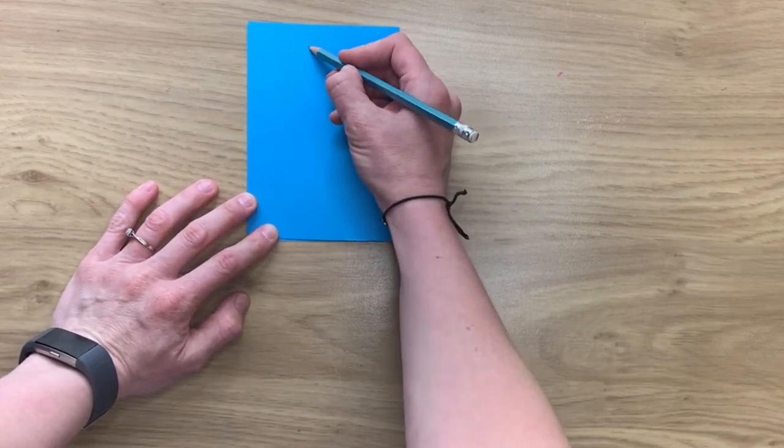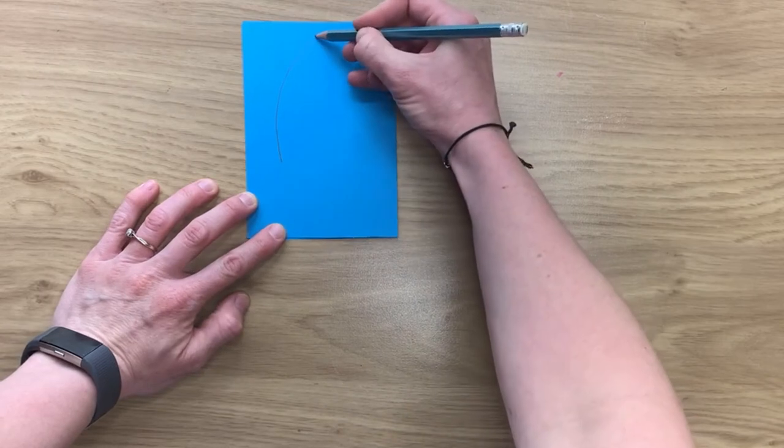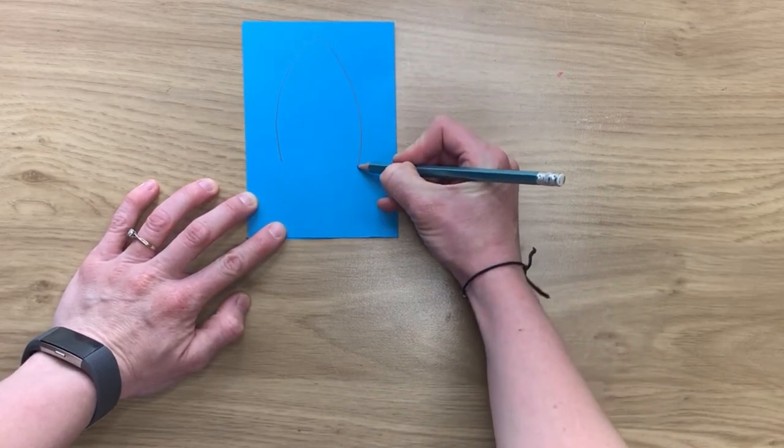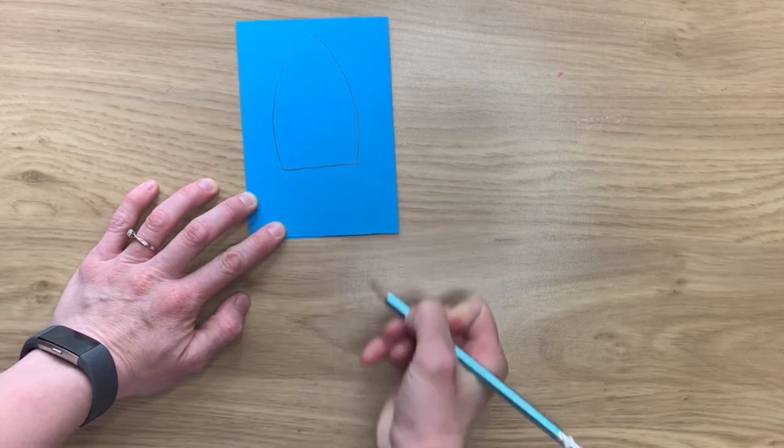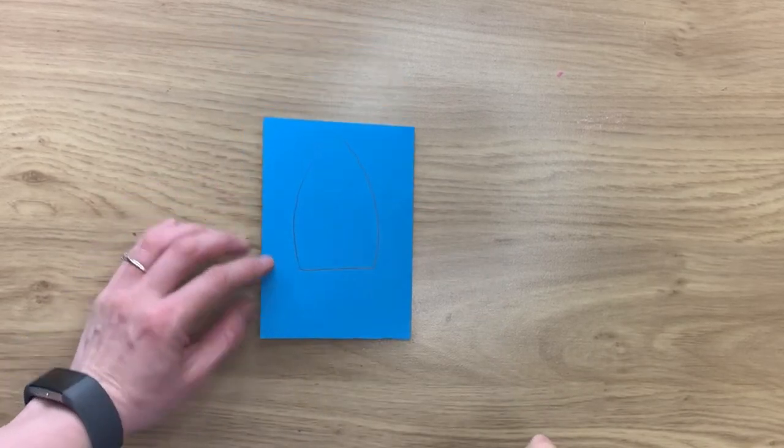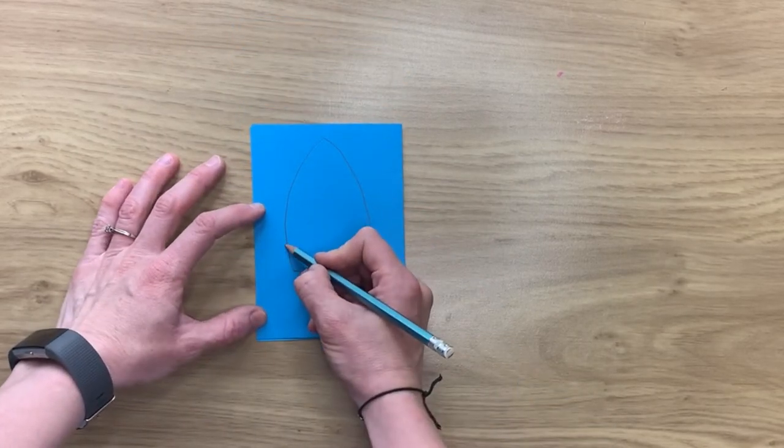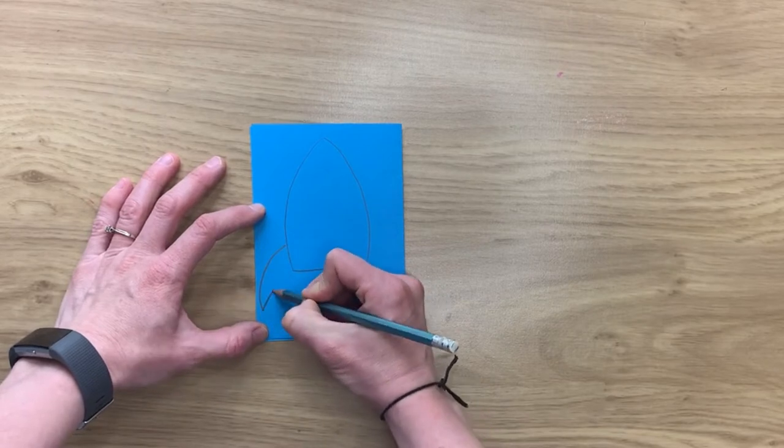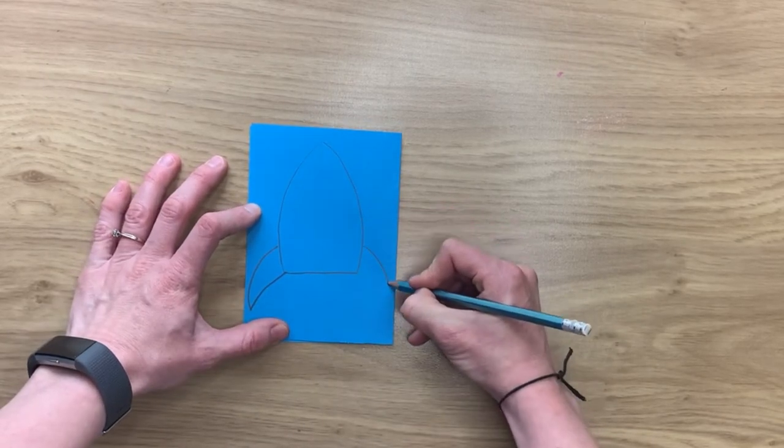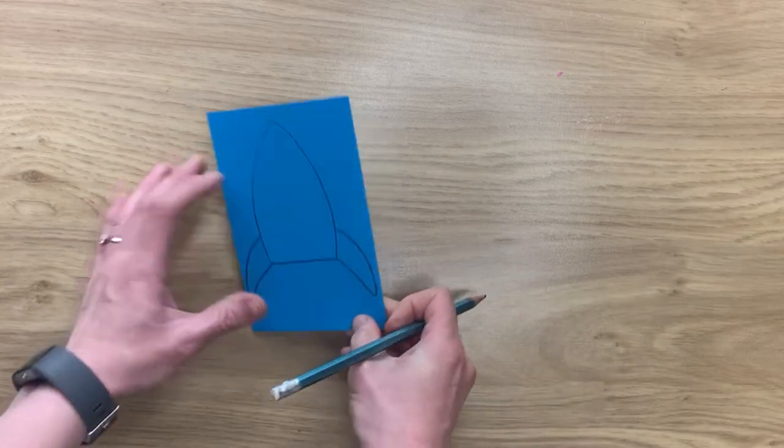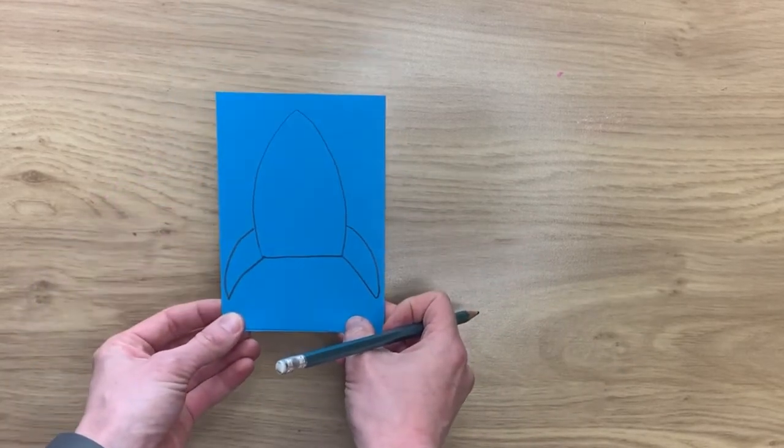You can fill most of the page if you want a rough idea of how big it needs to be. So you want the main body of the rocket and then down the side like that. So you end up with a rocket like that.